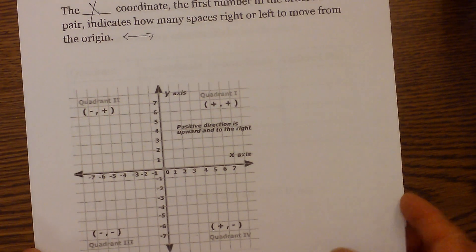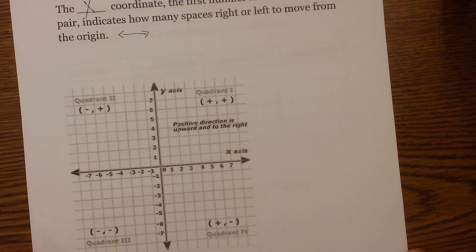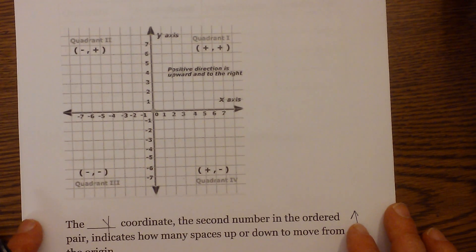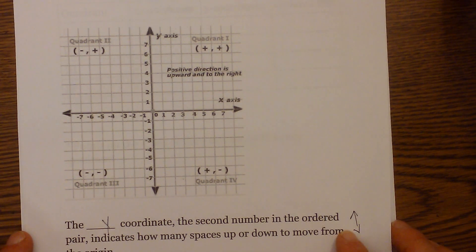Now let's talk about a couple other things. The coordinate plane is divided up into four quadrants. These four quadrants move in a counterclockwise fashion.